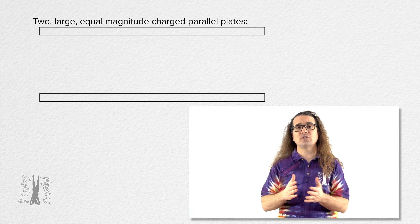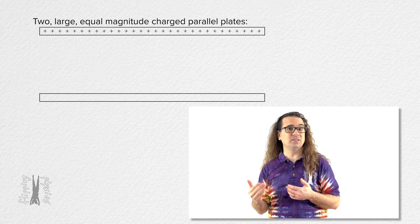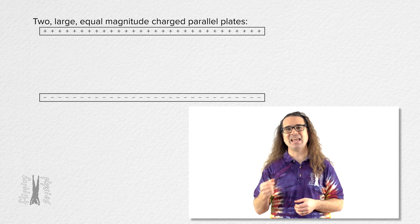Let's say we have two large charged plates of equal magnitude. The top plate has a positive charge and the bottom plate has a negative charge.